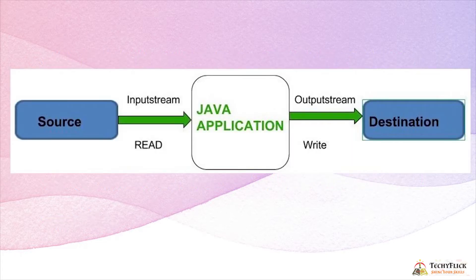So source and destination - this is our Java application run. The source will be in the Java application, input stream reads, output stream will be in the destination, Java application will write.